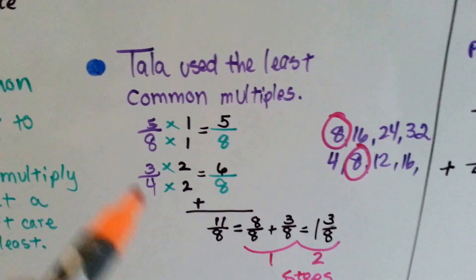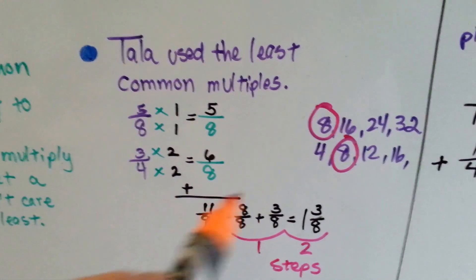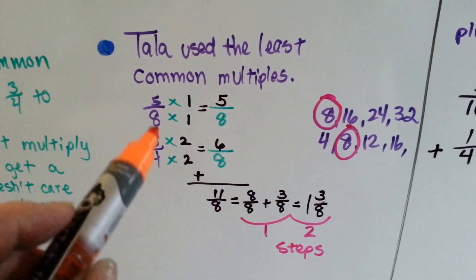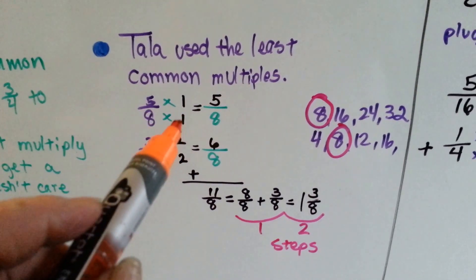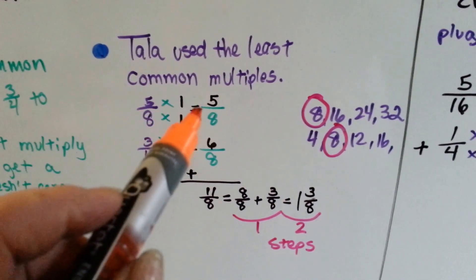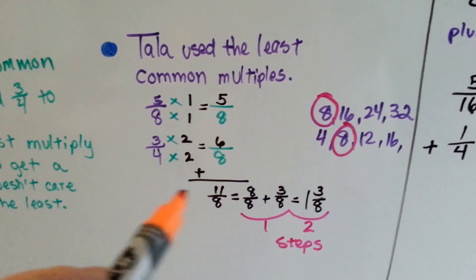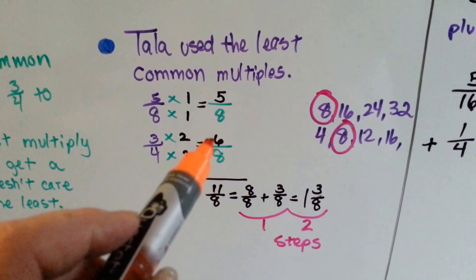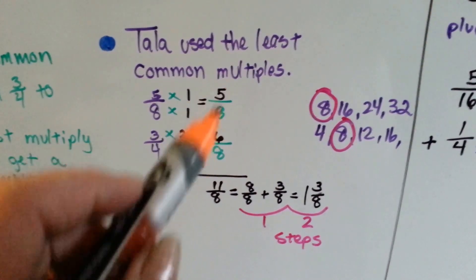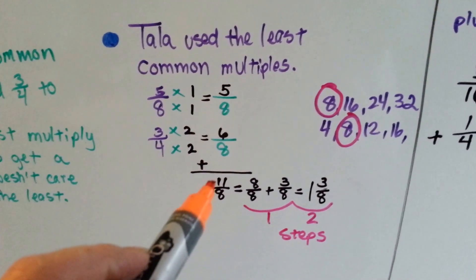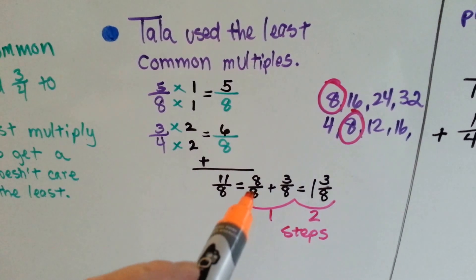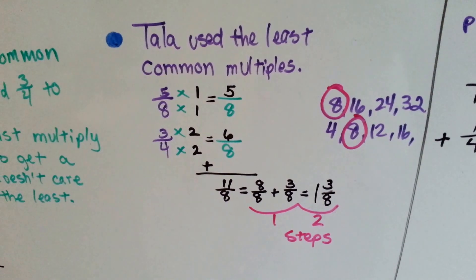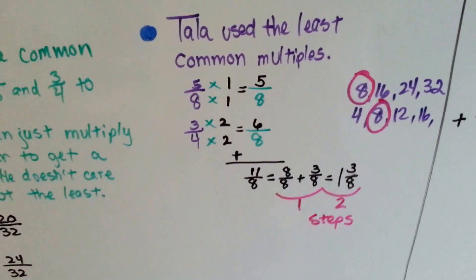Now, Tala used least common multiples. She listed the multiples and saw that they both could meet at 8's house and it was the smallest number. So what does 8 need to become 8? 1. So 5 got multiplied by 1 and it stayed 5/8. The 4 got multiplied by 2 to become an 8, and the 3 got multiplied by 2 to become a 6. She just added the 5 and 6 and got 11. She pulled the 8/8 out of it, which is 1 whole, and had 3/8 left and got 1 and 3/8. She did it in 2 steps.